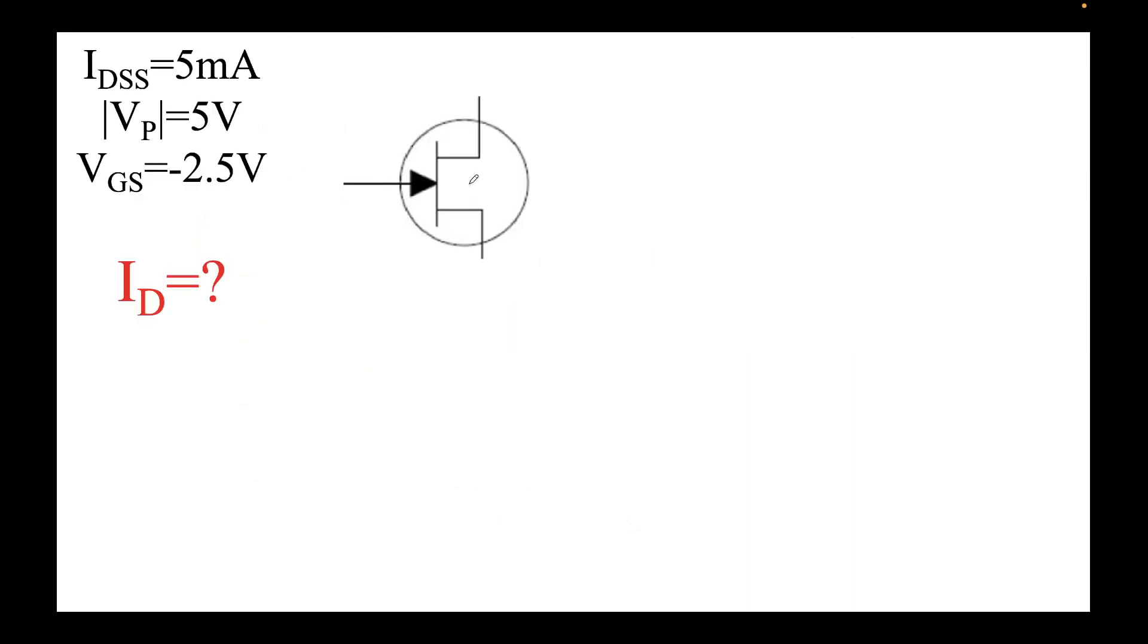Getting back to the problem, this was the N JFET that was given to us: IDSS equal to 5 milliamps and pinch-off voltage is minus 5 volts, and VGS is minus 2.5 volts.